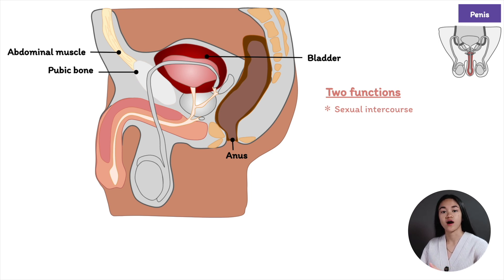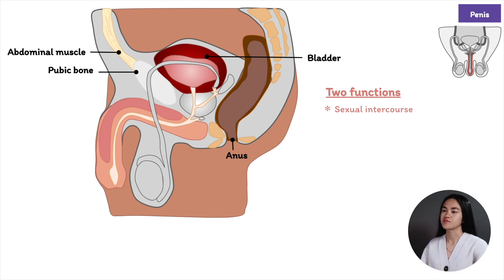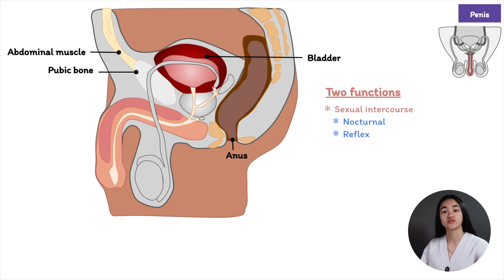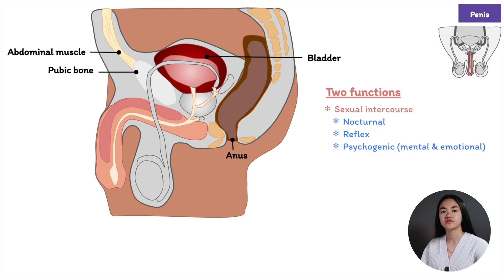The erectile tissues are filled with blood due to high parasympathetic activation or the relaxation of smooth muscle cells. There are three types of erection: nocturnal, which follows REM sleep or rapid eye movement periods; reflex, from genital stimulation; or psychogenic — such as visual stimulation, fantasy, or smell.